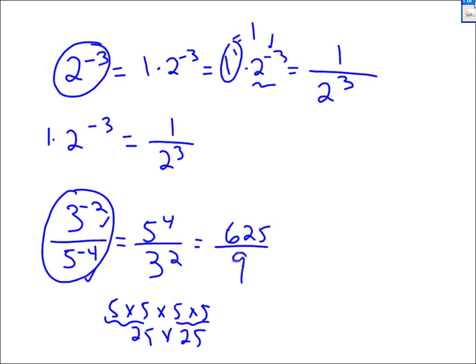You move from top to bottom, bottom to top, and the sign of the exponent changes. You don't need to move everything — only move the factors that have negative exponents.